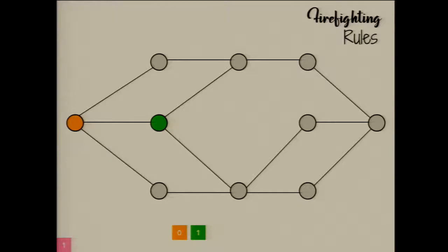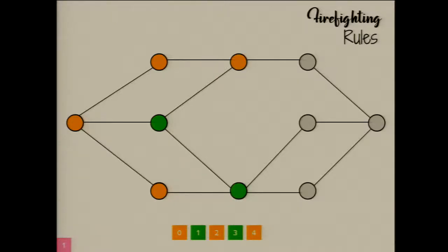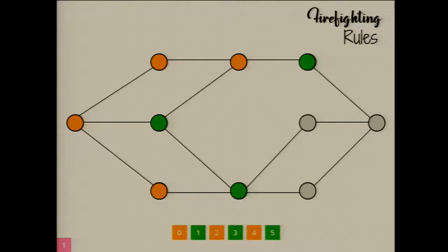In the next step, every vertex adjacent to a burning vertex that is not protected by a firefighter also catches fire. So the fire is constantly spreading BFS-style through the graph. For instance, these vertices now catch fire. And now I get to place a firefighter again. So that's where I place the firefighter. And now this vertex catches fire. I place a firefighter there. And at this point, you can probably sense that the fire is throttled and it can't spread anymore.